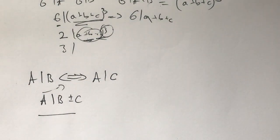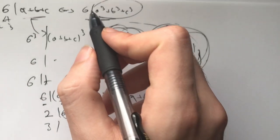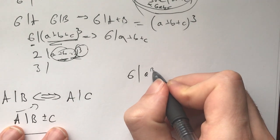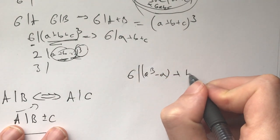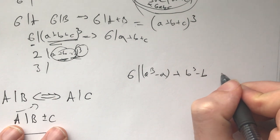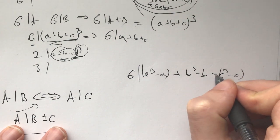Like, it's a shortcut. And here, the thing you would like to prove is that 6 divides a cubed minus a plus b cubed minus b plus c cubed minus c. And now, what's the thing?